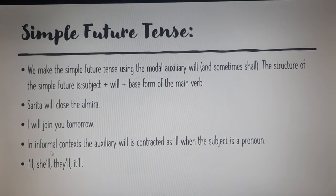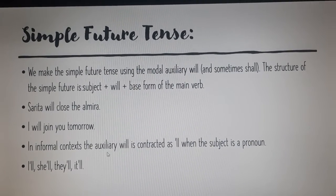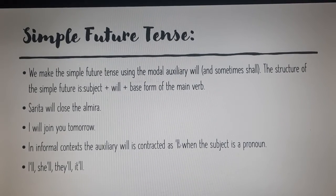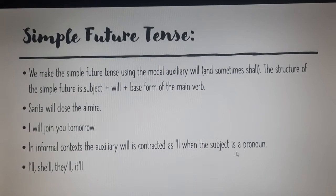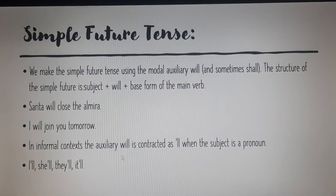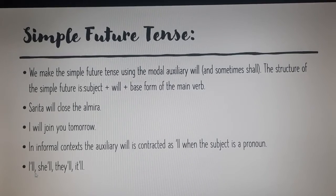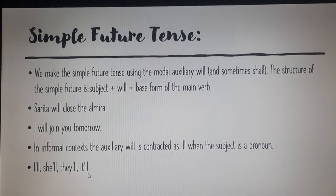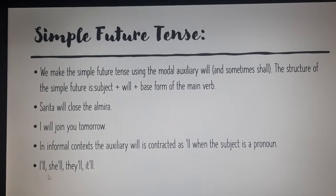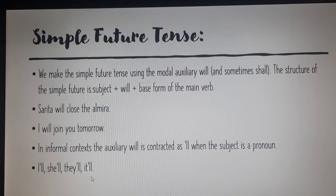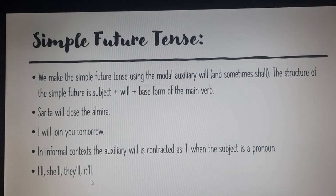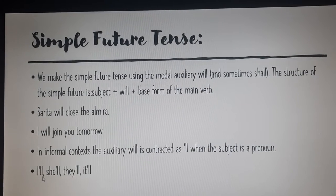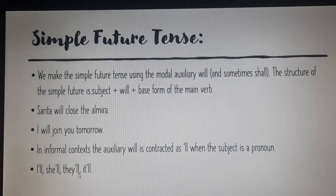In informal contexts, the auxiliary 'will' is contracted with an apostrophe and double-L. When the subject is a pronoun, it becomes: I'll, she'll, they'll, it'll. For example: 'It'll be completed by tomorrow', 'They'll do it', 'She'll come by tomorrow', 'I'll have to do it again.'